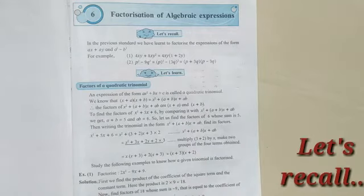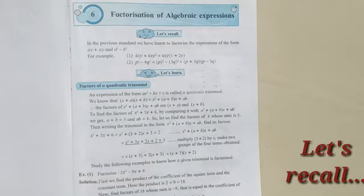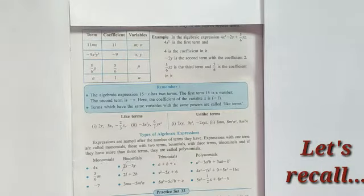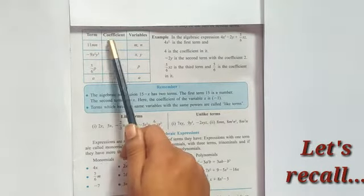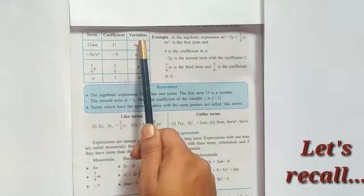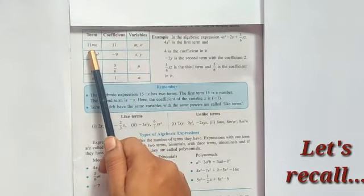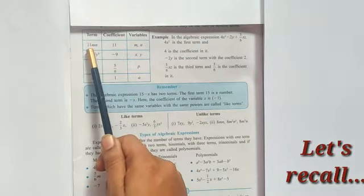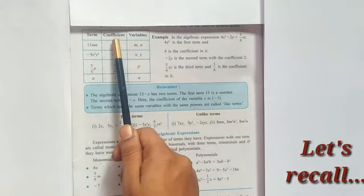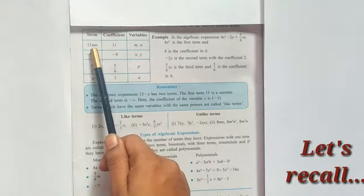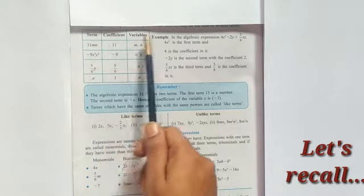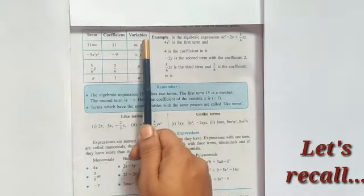Before going ahead, let's recall what we have studied in our last standard. As you know very well about the terms — coefficient and variables. Suppose this term is 11mn. Among this, 11 is a digit called the coefficient, and the alphabetical letters mn are called variables.